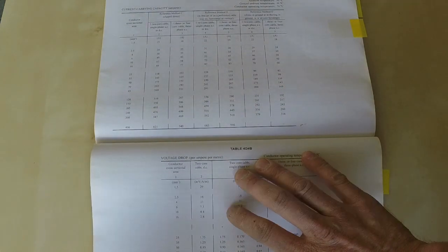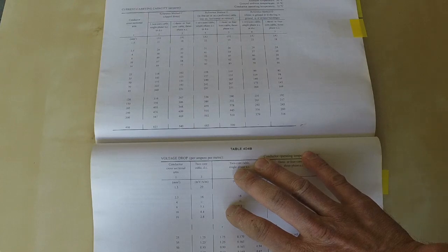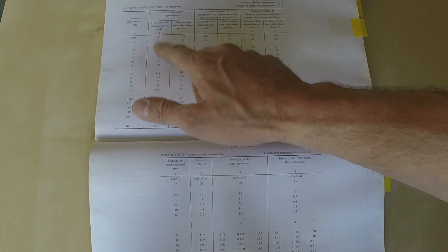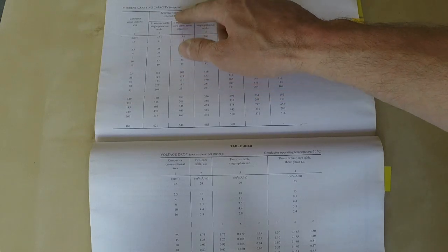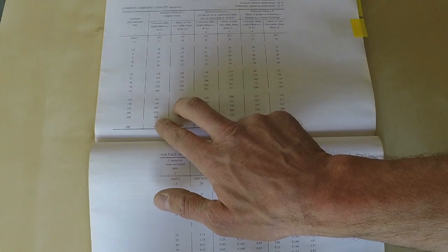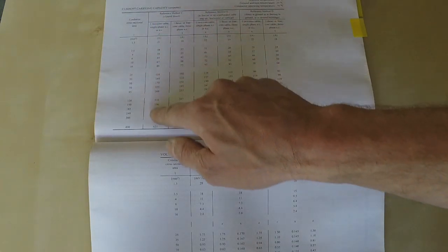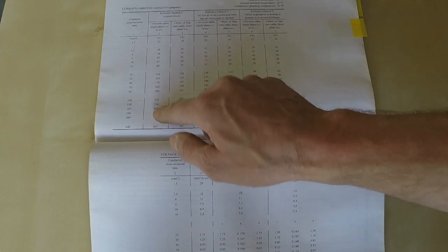So firstly, find out which cable we're using. Method C, which is these two columns. We are using single phase AC, so that rules it down to this column.